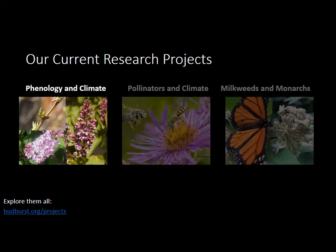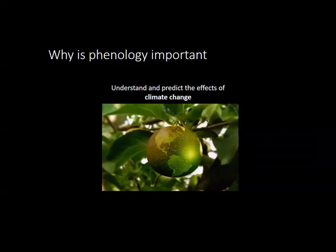The first project is our Phenology and Climate project. Phenology is the study of the timing of plant lifecycle events — when are plants blooming, when are leaves changing color in the fall. If plants used to bloom in May and now they're starting to bloom earlier in April, that shift is a changing phenology. We collect data to understand and predict the effects of climate change on phenology.